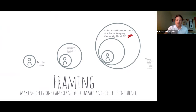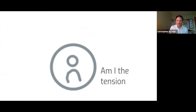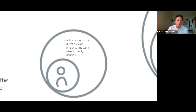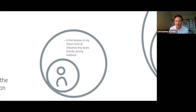It's useful to frame your tension. Look at your circle of influence — is it in your sphere? Perhaps you had an emotional response that led to an internal judgment, something for you to process. Or is the tension in your direct circle of influence — within your team, friends, family, or hobbies? For example, tensions on your team could lead to new initiatives, new projects, new milestones, even a new mission.